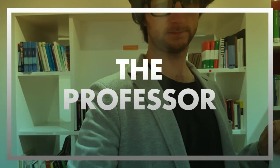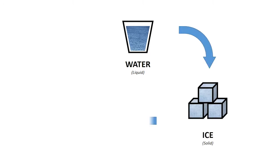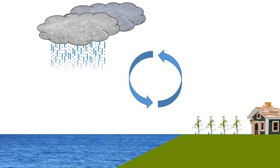Hey there, I'm the professor. Let's talk more about this water footprint. Did you know the total amount of water on the planet never actually changes? It's true. The water cycle is constantly moving water around from liquids to solids to gases and back again. These are called phase changes. But no matter what phase the water is in, the total quantity of water remains the same.